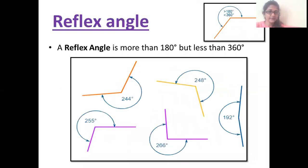The other type of angle, that is a reflex angle. So, see here, that's more than 180 degrees but less than 360 degrees. So, as you can see here, that's 244. That is more than 180 degrees, right? But it's less than 360. So, see here, all of them are more than 180 but less than 360 degrees. Okay, that is called as reflex angle.